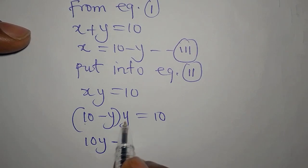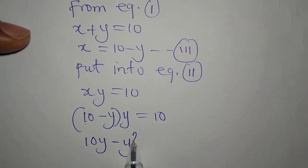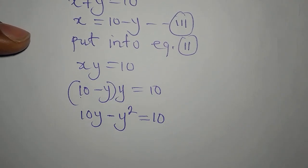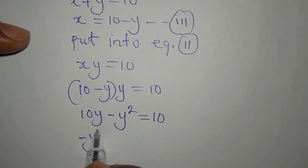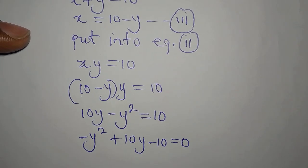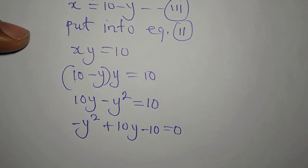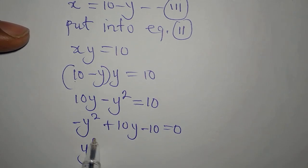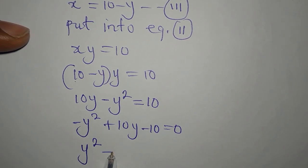Minus y squared, you know, minus y times y is minus y squared. This is equal to 10. Now we have minus y squared plus 10y, then minus 10 equals zero if you bring everything to the same side.